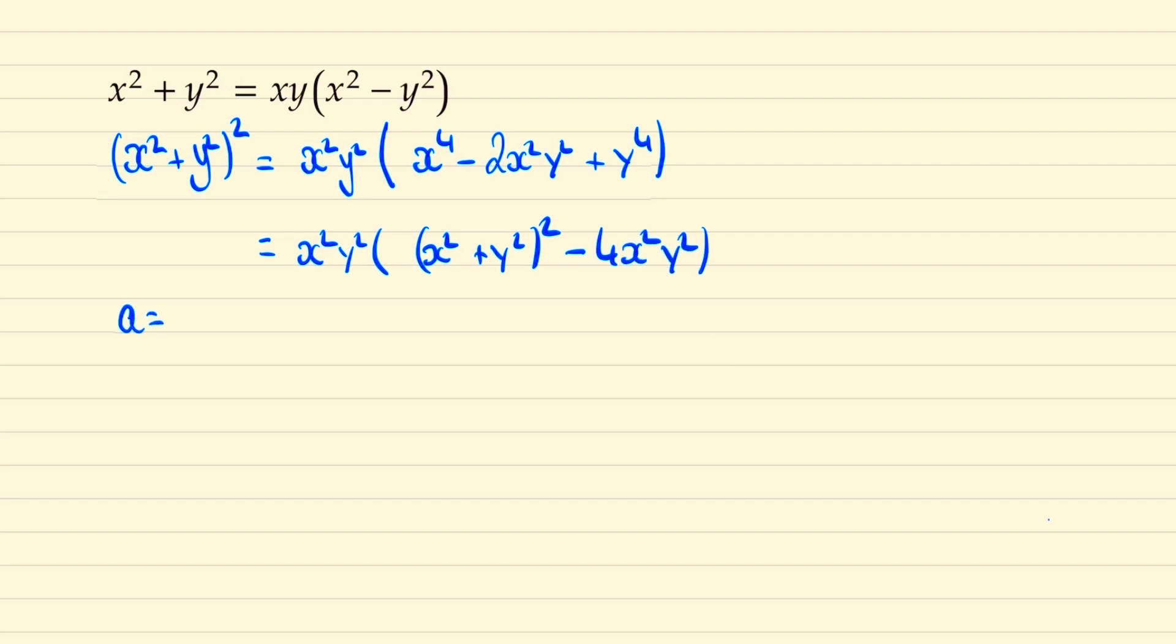And if we let a equal to x squared y squared and b equal to x squared plus y squared, then we arrive at b squared equaling a times b squared minus 4a. And by expanding this equation and then factorizing it we can show that b squared is equal to 4a squared over a minus 1.